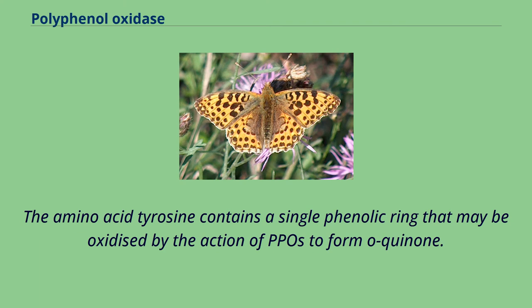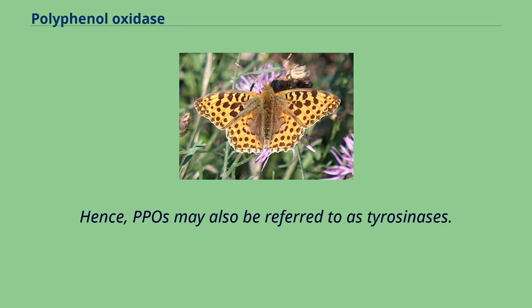The amino acid tyrosine contains a single phenolic ring that may be oxidized by the action of PPO to form O-quinone. Hence, PPOs may also be referred to as tyrosinases.